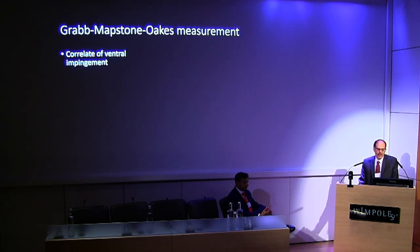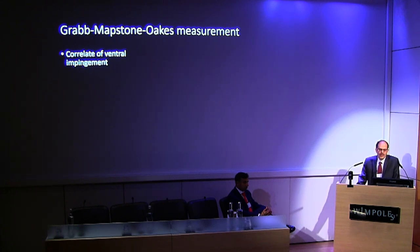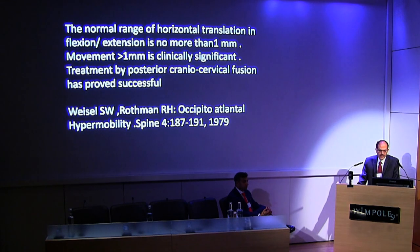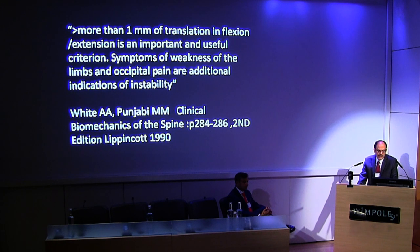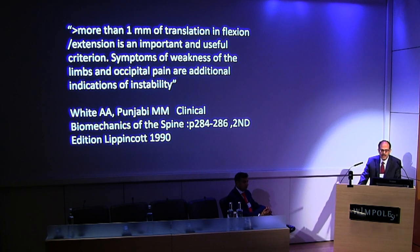The Grab-Map Stone Oaks measurement is a correlate to ventral impingement, and my way of thinking is that ventral impingement and tension on the cord is injurious. There's a normal range in translation described by Wiesel and Rothman of no more than one millimeter. White and Panjabi also believe that one millimeter translation at the craniocervical junction is abnormal, and they found improvement with surgical intervention.